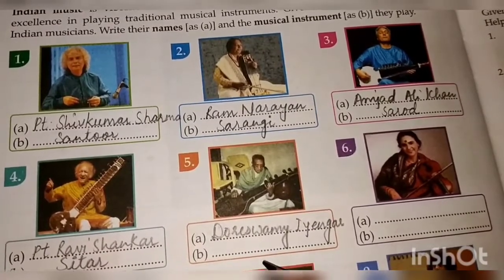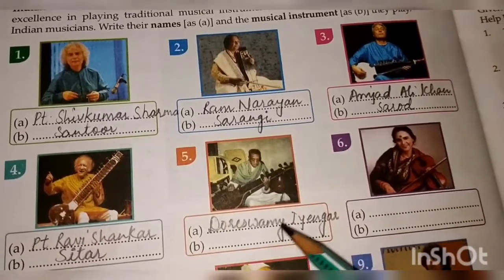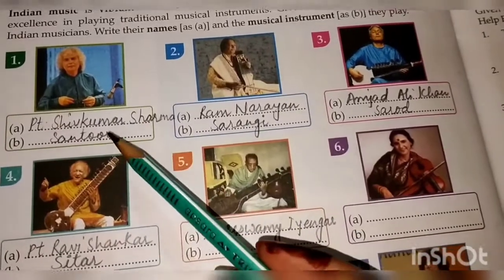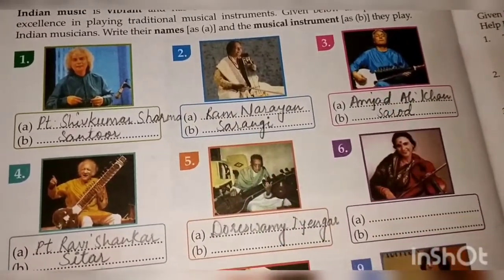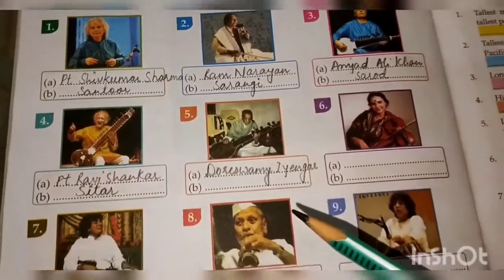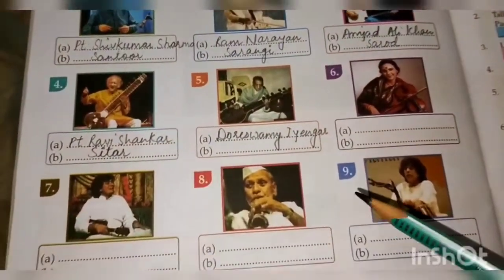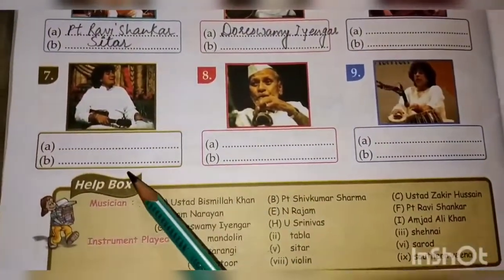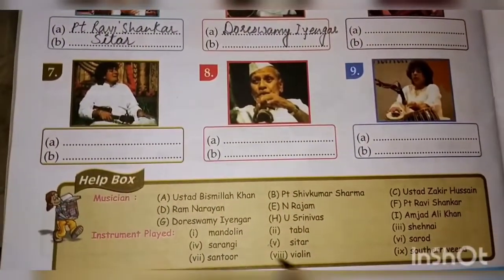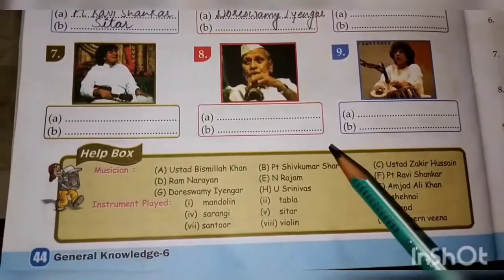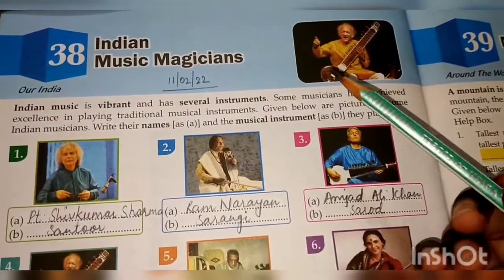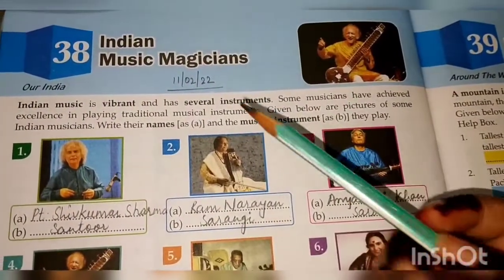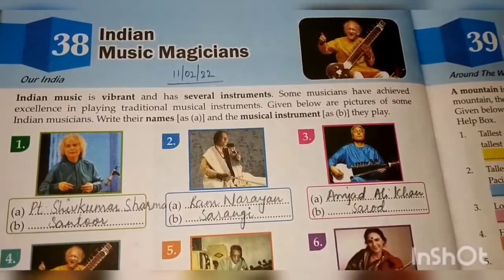You all have to write the rest of the part yourself. I have done the first, second, third, and fourth parts. You all have to write the remaining parts yourself using the help box given, on page number 44. Read it carefully and then write yourself.